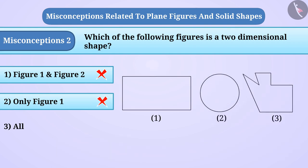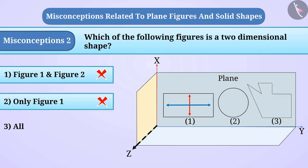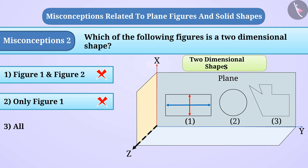Here, each figure is situated in one plane. Neither of these shapes occupies any space in more than one plane, nor does it have any third dimension. So all these shapes are two-dimensional. Hence, option 3 is the correct answer.